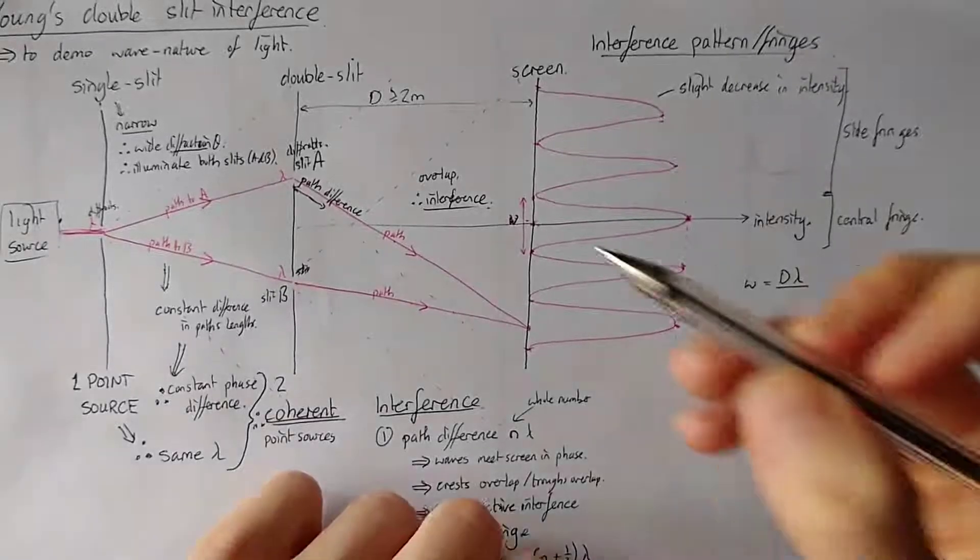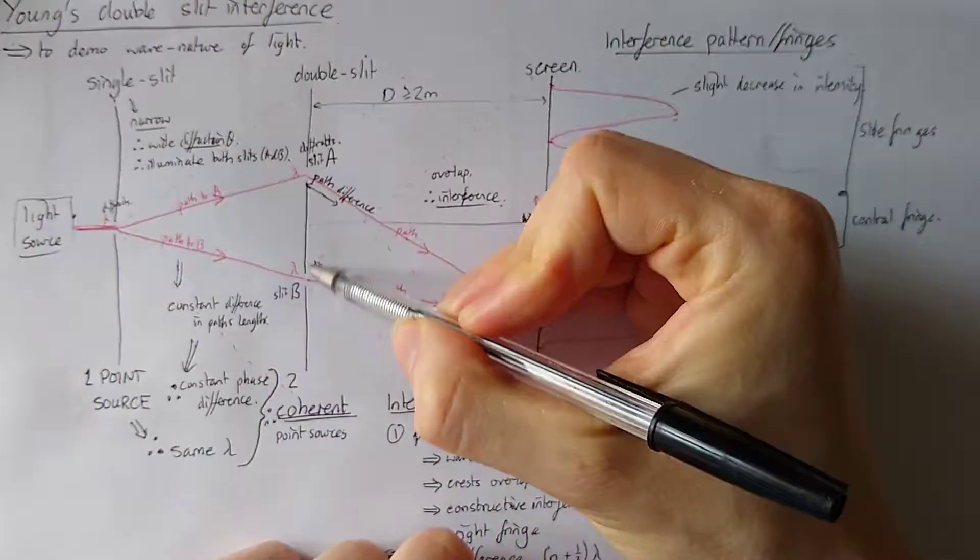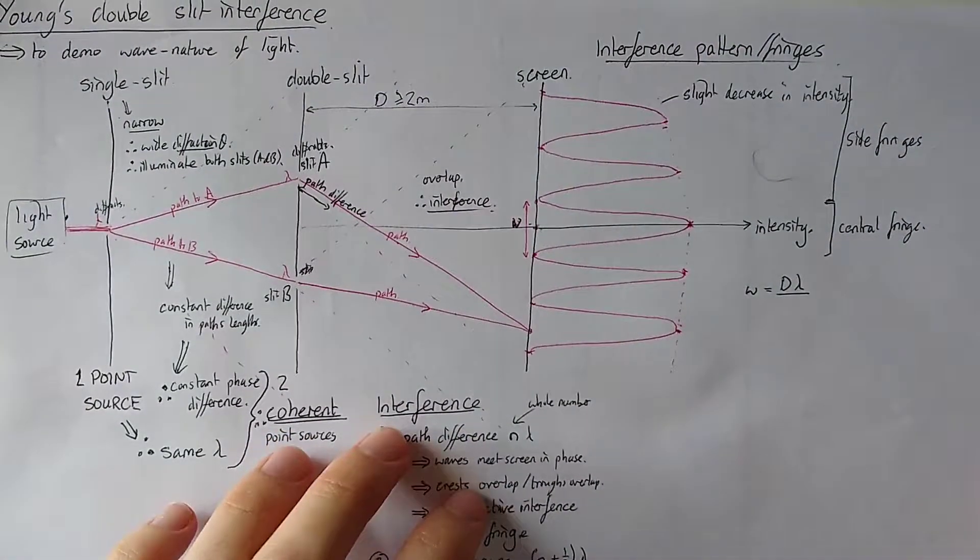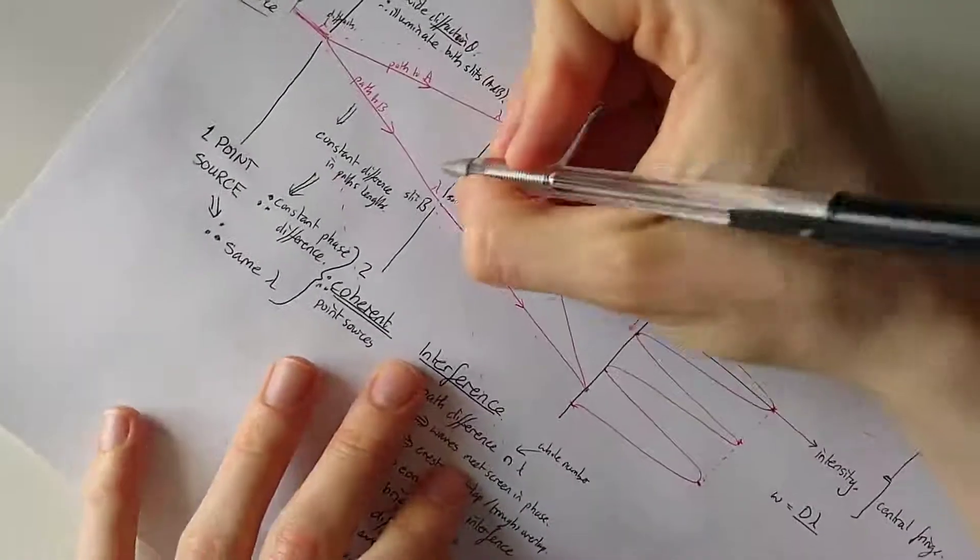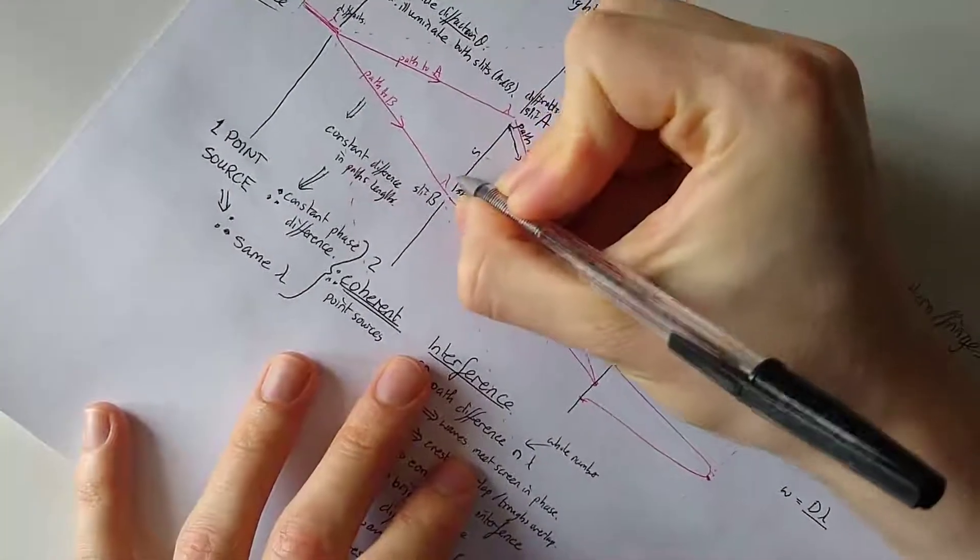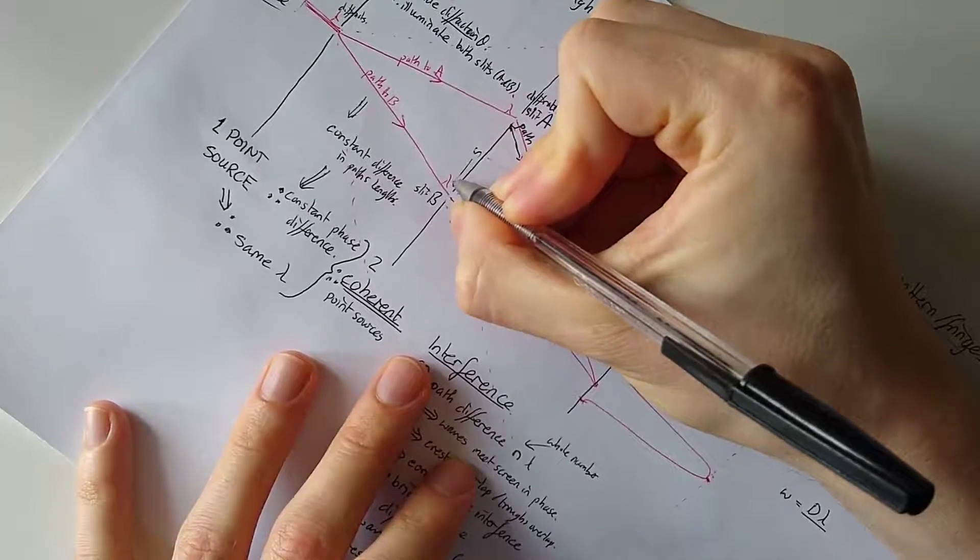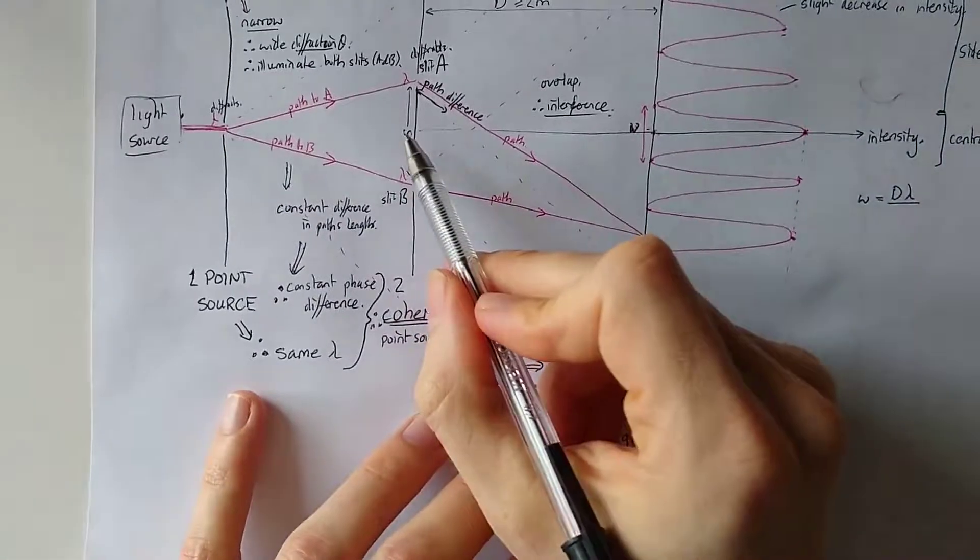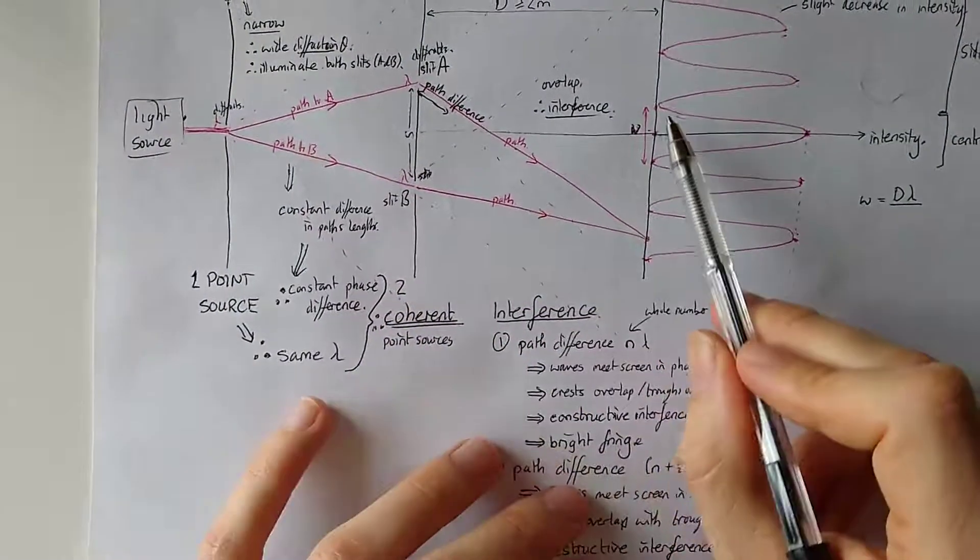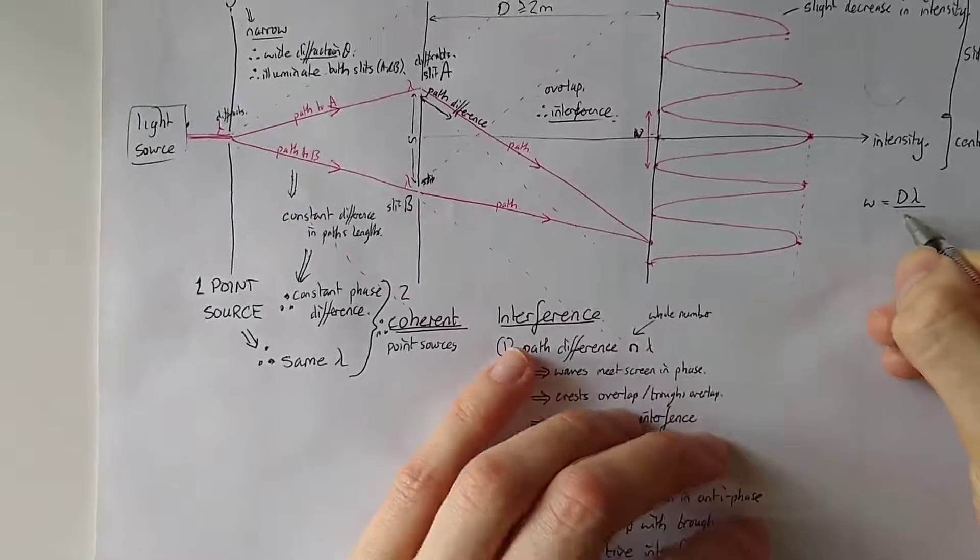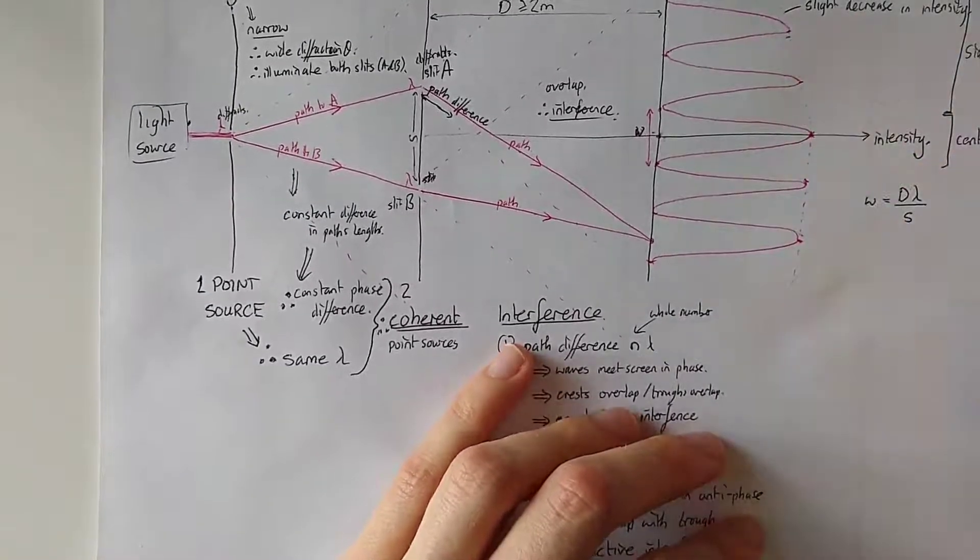As I was saying, as this slit separation, which we could label S, I'm going to put that in here. So we've got S is the slit separation and W is the fringe width. They're inversely proportional and that goes in there.